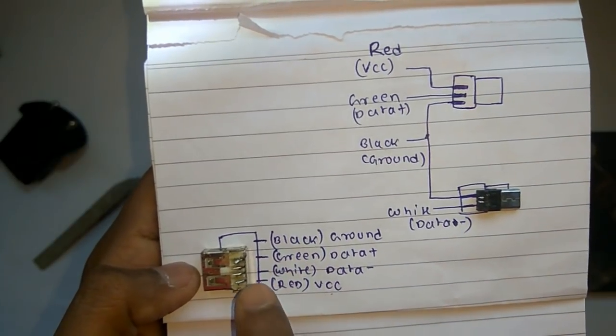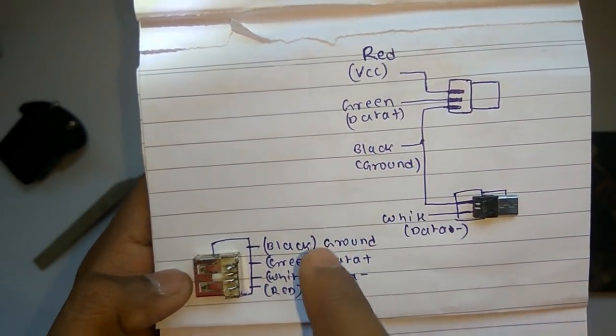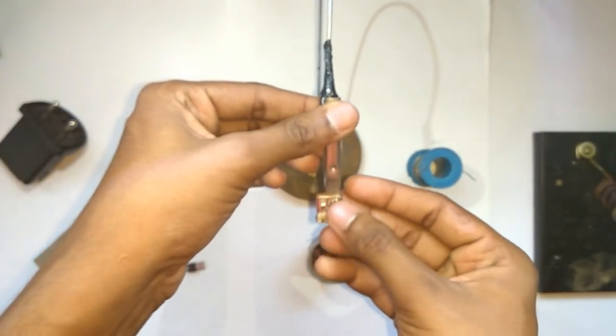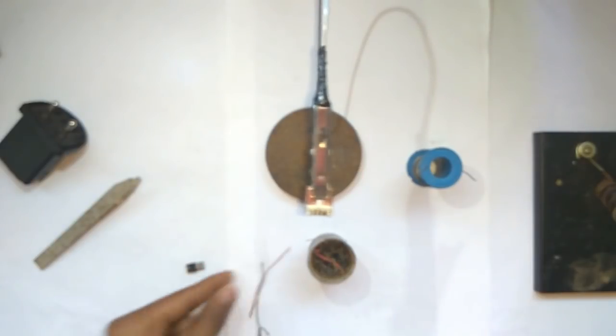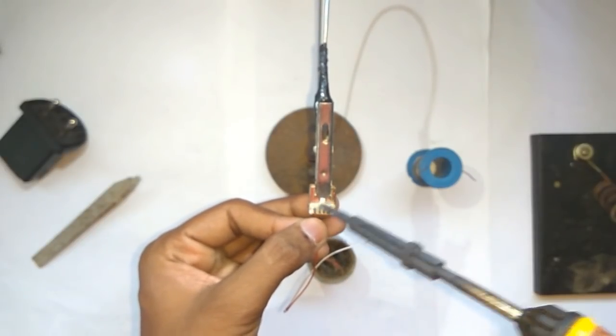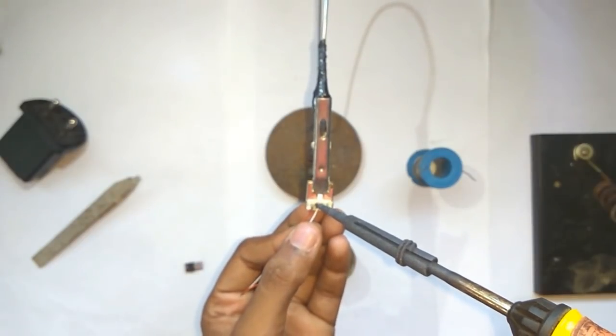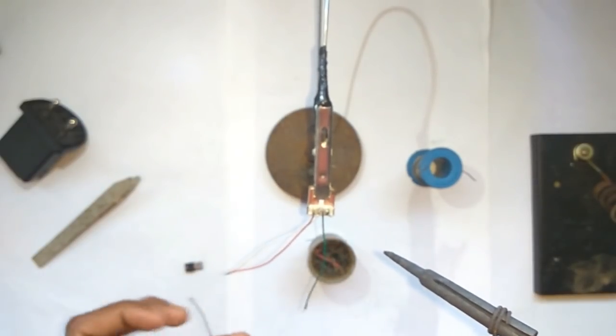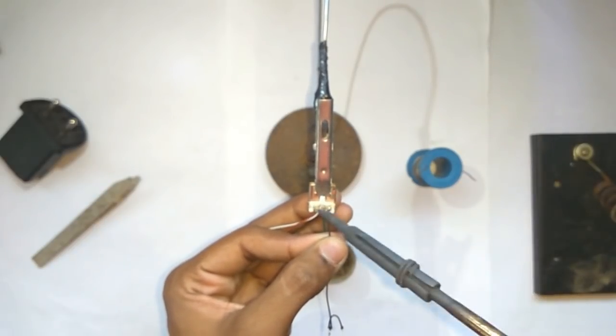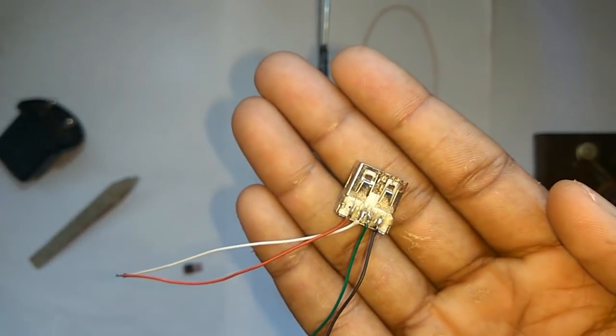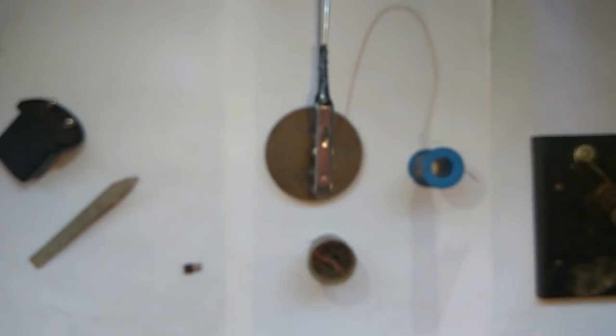So now we will just solder the red to the red one, white to the white one and accordingly the rest of the wires. So let's start with the soldering. First I will solder the USB part. So these are the wires and let's begin: first the VCC, then is the data minus, then is the data plus and then is the ground one. Just make sure that you don't connect the pins to each other. So you can see over here.